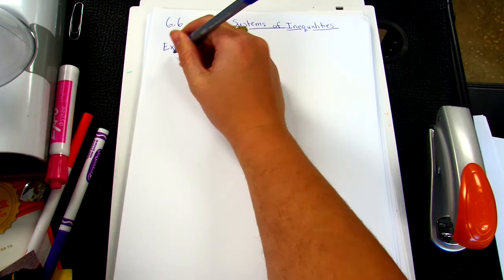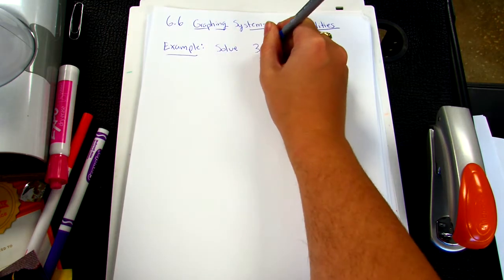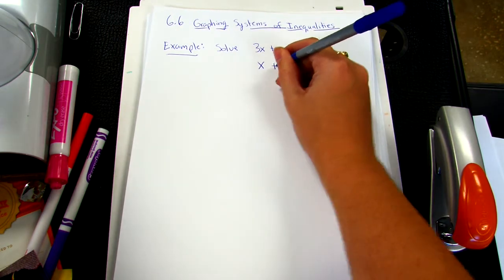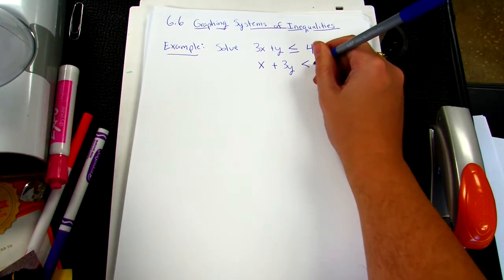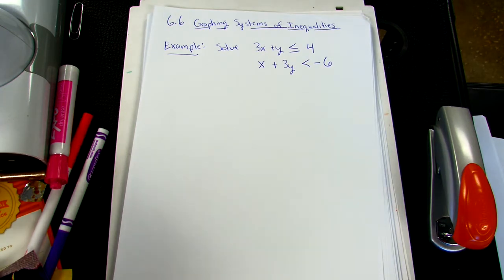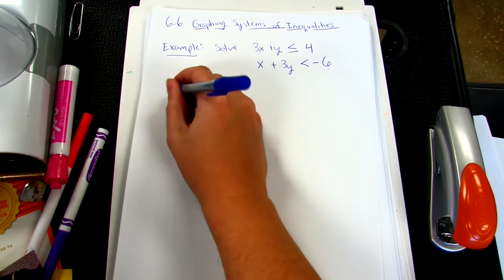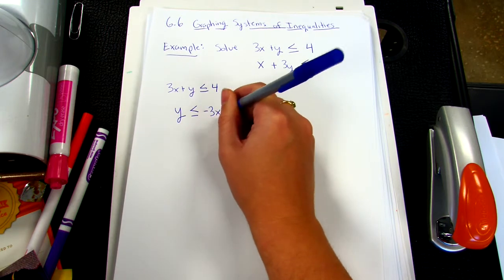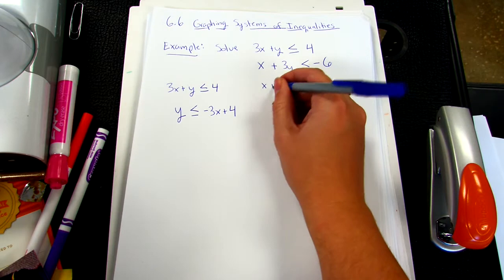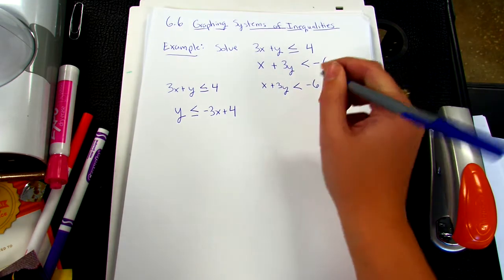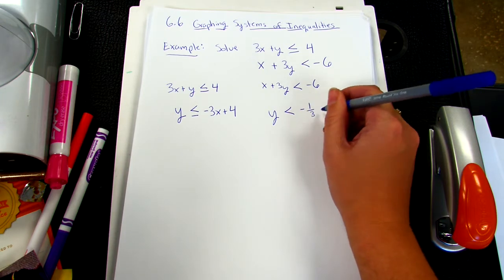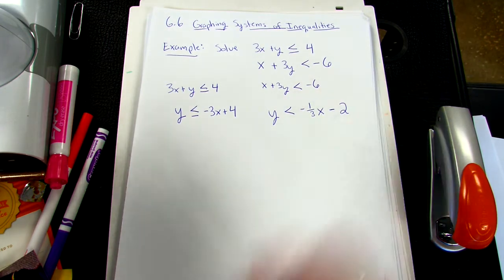Let's say we want to solve: 3x plus y is less than or equal to 4, and x plus 3y is less than negative 6. The first thing we have to do is put each inequality into slope-intercept form. So the first equation becomes y is less than or equal to negative 3x plus 4. The second equation becomes y is less than negative one-third x minus 2.